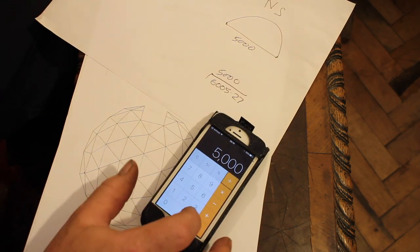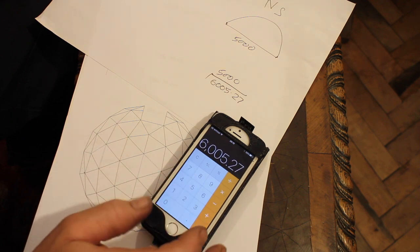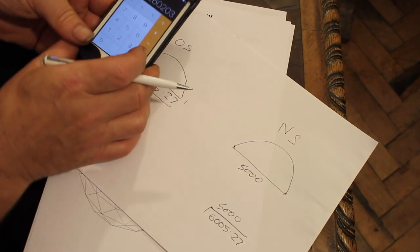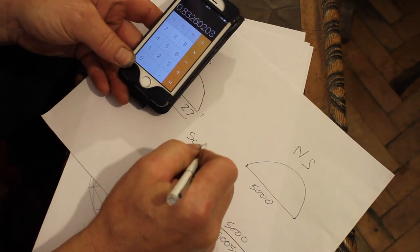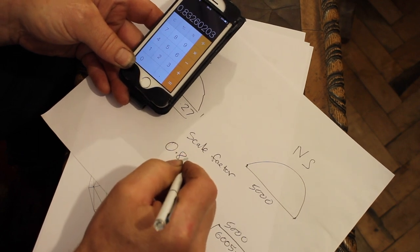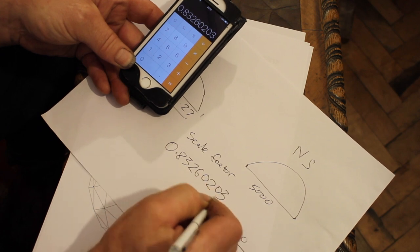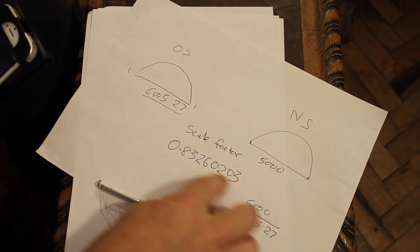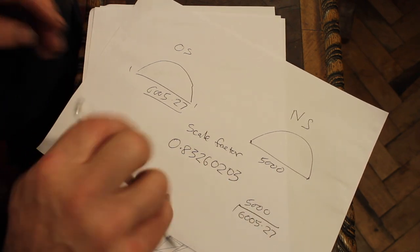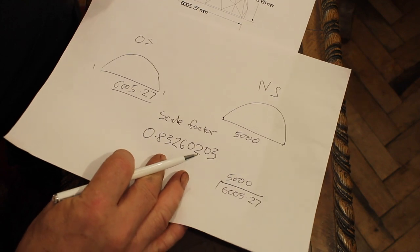Get the calculator out here we go. So we have 5000 divide by 6005.27 equals. Right here we go, so the scale factor, we'll call this the scale factor, is 0.8326023. That's the more decimal places, the more accurate you'll be, so you might as well go with the full lot of decimal places you can. You can always round your figures up or down after, I'll demonstrate.